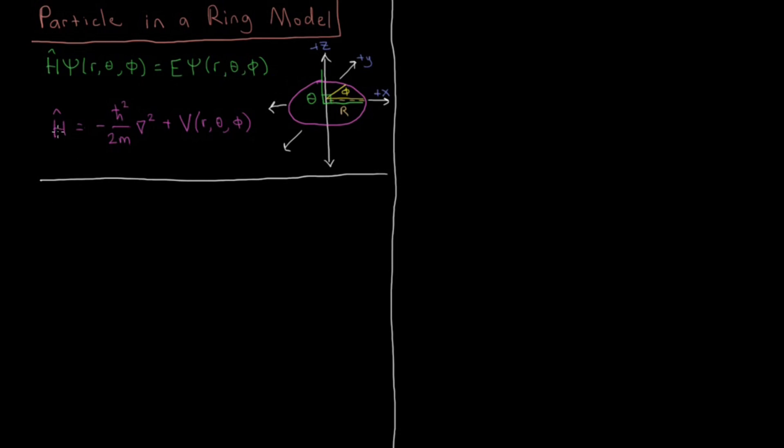So our Hamiltonian as usual will be minus h-bar squared over 2m times the Laplacian operator in three dimensions plus the potential which in principle is in three dimensions.